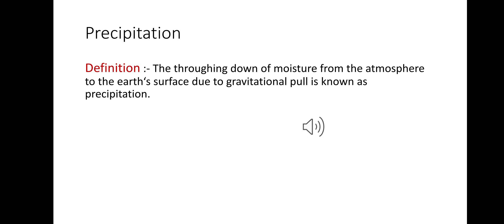What is precipitation? The throwing down of moisture from the atmosphere to the earth's surface due to gravitational pull is known as precipitation. Precipitation occurs in different forms like rainfall, drizzle, snowfall, hail, sleet, etc.